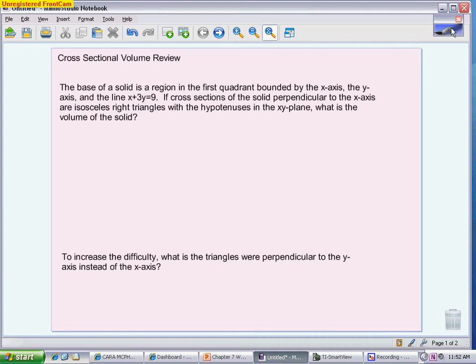When you're looking at cross-sectional volume, first thing you need to do is you need to have a sketch of what the base of the solid looks like. If you look at the first one, it's talking about a solid that's in the first quadrant bounded by the x and y-axis and the line x plus 3y equals 9. Now, some problems will actually draw the picture for you. I actually took this from a book that had the picture provided.